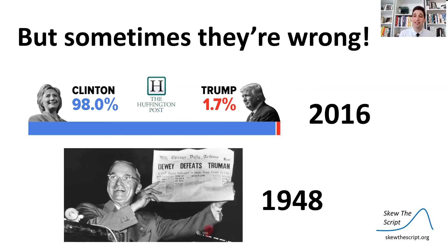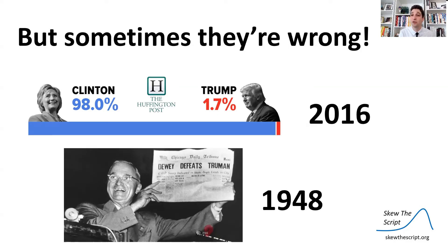And famously, in 1948, some news organizations were so confident Truman would lose the election, they printed it on the front page of their preprints. And then once the election results were counted and it showed Truman won, he got to hold up those preprints saying he won instead.